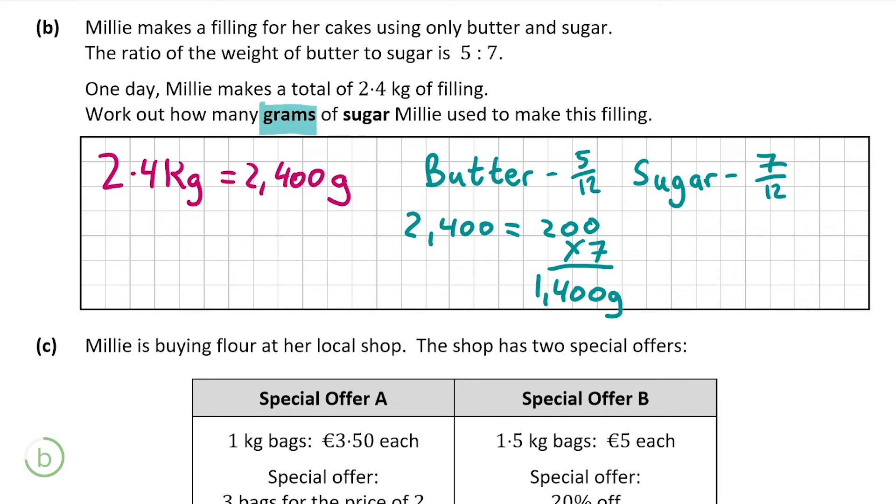You can leave the ratio as a ratio if you want, but I find with some questions, especially questions like this, it can be easier to change them into two separate fractions and then divide the denominator into whatever number we're given and then multiply by the numerator. Of course you can leave it as a ratio and it will still work, but I think it's simpler and more straightforward to do it like this. That's part B of the question.